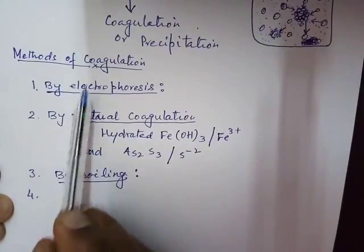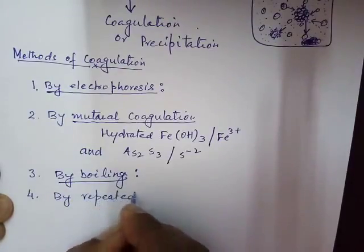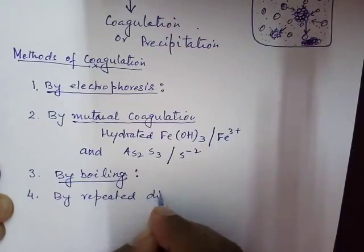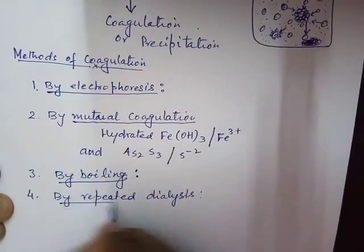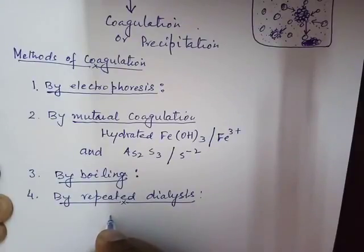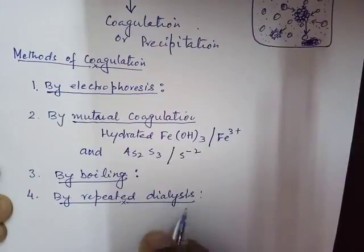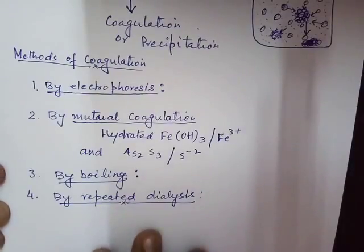The fourth method of coagulation is by repeated dialysis. If dialysis is repeated again and again, even the last traces of electrolyte are lost from the colloidal solution. In the process of dialysis, electrolytes present in the solution pass out through the semi-permeable membrane. By repeated dialysis, colloidal particles lose their charge and again precipitation will take place.